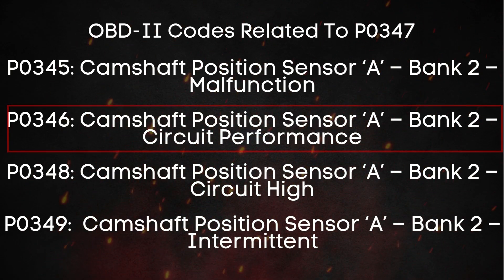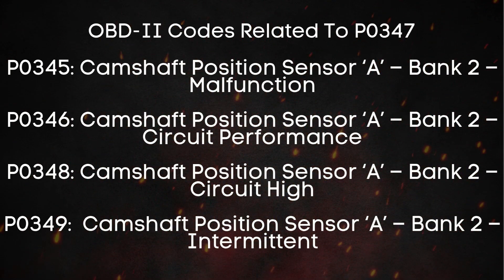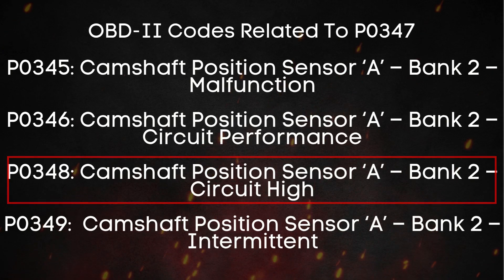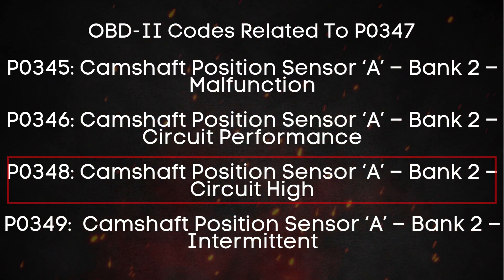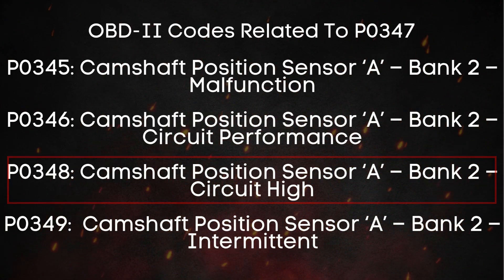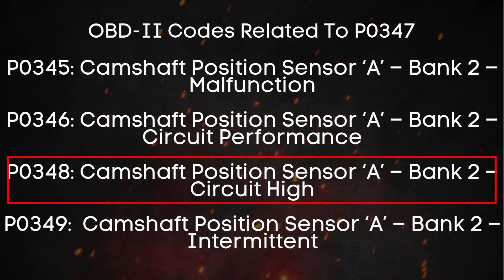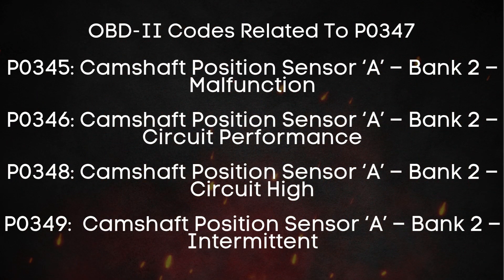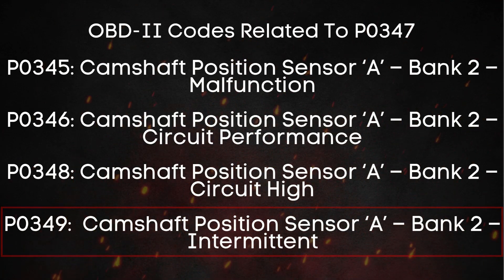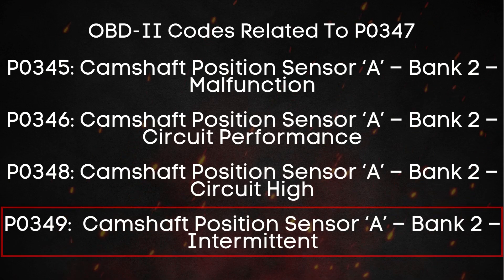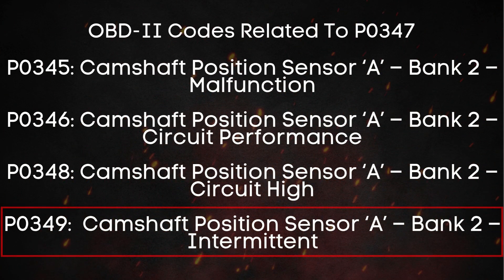P0346 could be due to incorrect timing, interference, or a weak signal. On the flip side, you might see P0348, which is intake camshaft position sensor for bank 2 circuit high — meaning the sensor is sending too much voltage, often due to a short circuit or a sensor that's completely failed. And finally, there's P0349, which stands for intake camshaft position sensor for bank 2 intermittent, meaning the signal is cutting in and out.